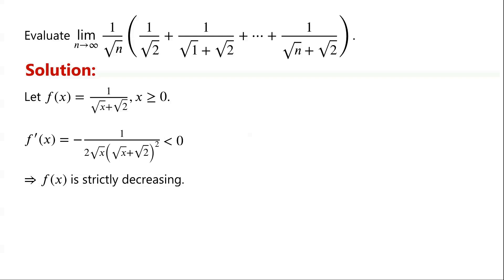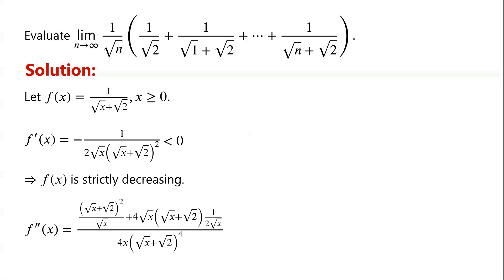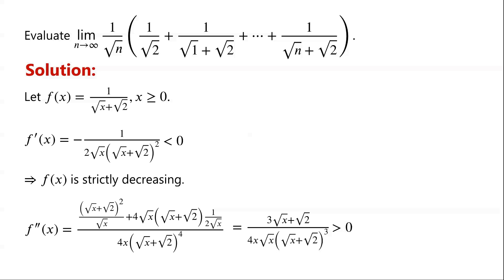Next, we calculate the second derivative of f of x. f double dash of x equals root x plus root 2 all squared over root x, plus 4 root x times root x plus root 2 times 1 over 2 root x, over 4x times root x plus root 2 all to the power of 4. Multiplying numerator and denominator by root x over root x plus root 2, this simplifies to 3 root x plus root 2, over 4x root x times root x plus root 2 all cubed. Clearly this is greater than 0, so f of x is convex.